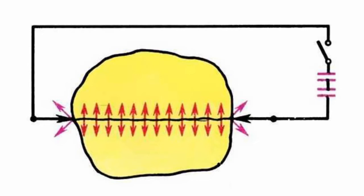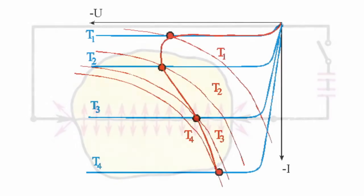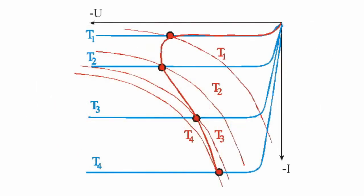There is therefore a sort of thermoelectric inverse connection between the current value and the temperature of the P-N junction, which leads to a rapid increase of current — that is, to the breakdown of the P-N junction.